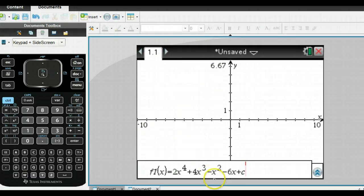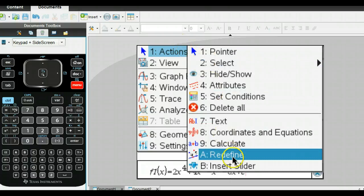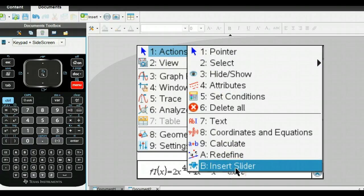So I have this typed in here with the value c. What we want to be able to do is put a slider in to change that value of c. So I type this in, and now you can go to Menu, then go to Actions, and then you can go down to Insert Slider.